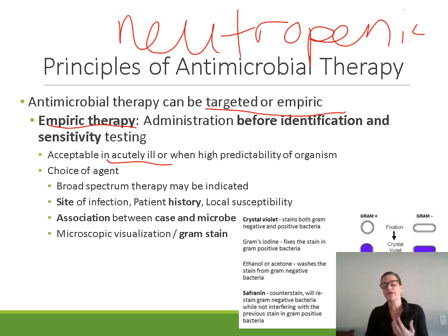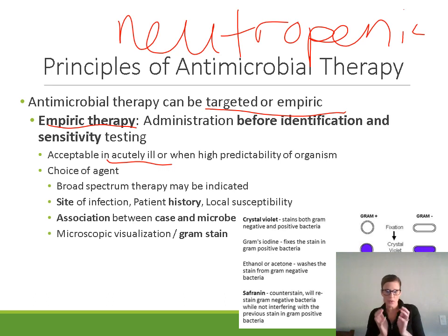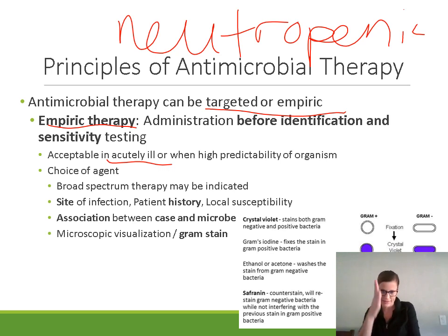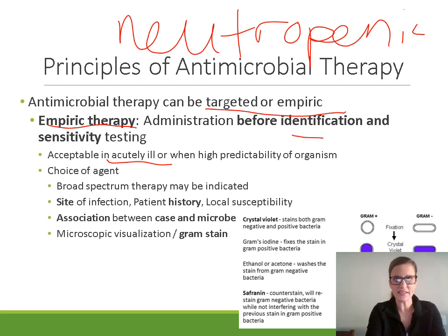Also, patients who have really serious infections like meningitis or sepsis — those infections are severe and can be fatal relatively quickly, so you start treating them as soon as you know that infection is there. Later, once you get identification and sensitivity information back, you can streamline therapy down to exactly the drug that's necessary. One thing that's really important: you have to obtain your specimen for identification and sensitivity testing before you start that empiric antibiotic.